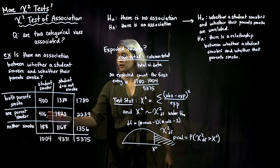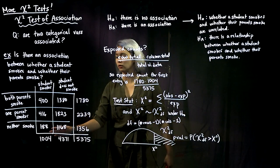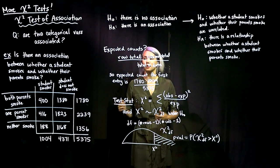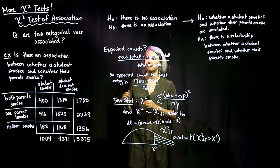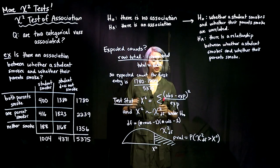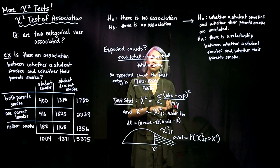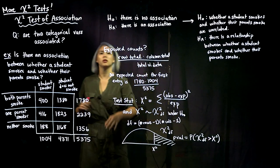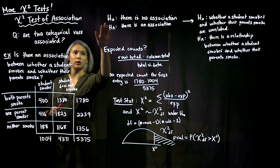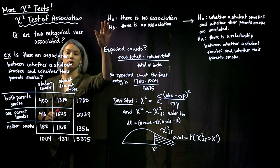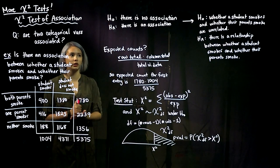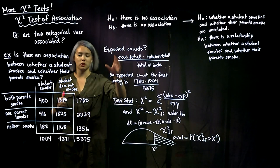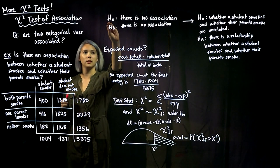Here we have the observed counts, and now we can go ahead and do our test to see whether or not there is an association between whether students smoke and whether their parents smoke. The null hypothesis is there is no association, and the alternative is there is an association.